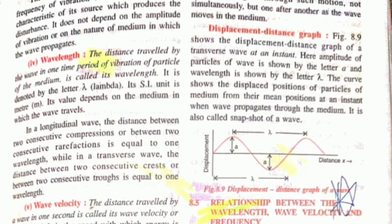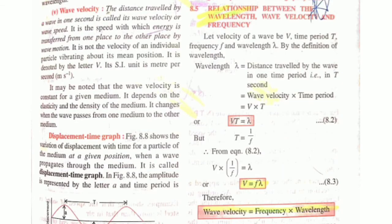The next topic is super, super important because teachers mostly give questions asking you to derive the relationship between wavelength, wave velocity, and frequency. This is very important. See how to derive things — you just learn the definitions, and through those definitions you can easily form the formula.